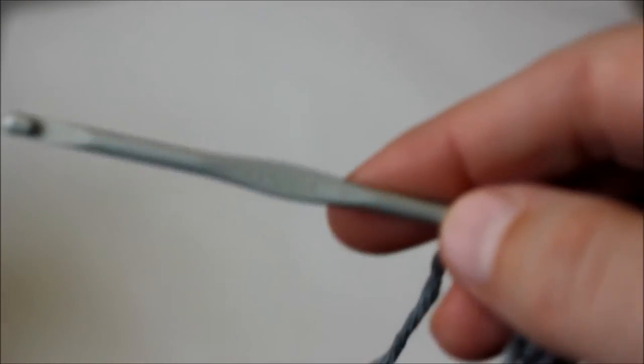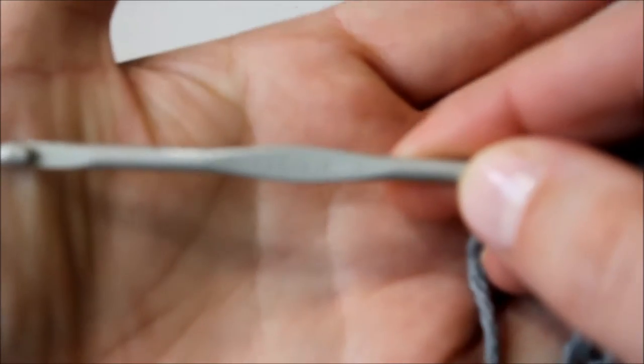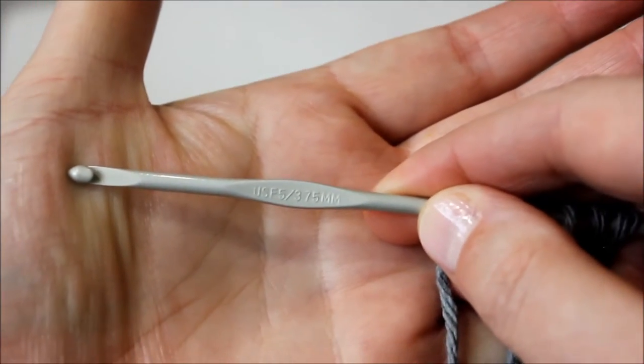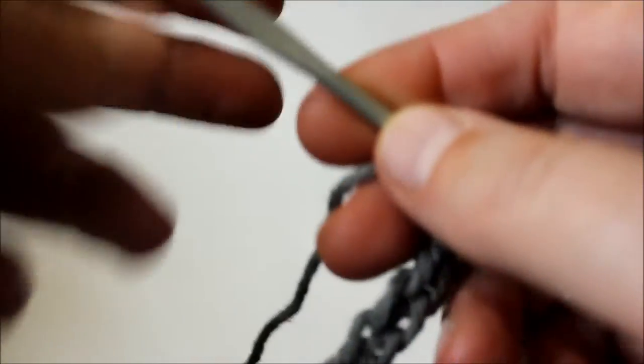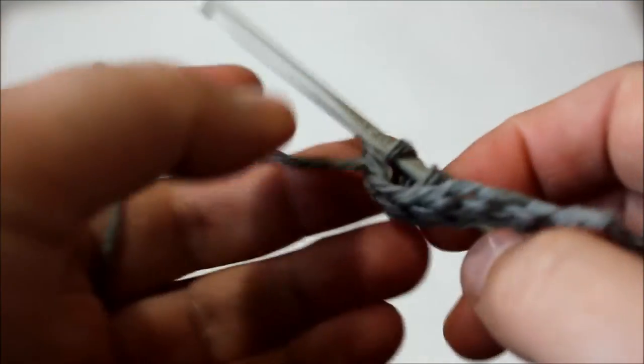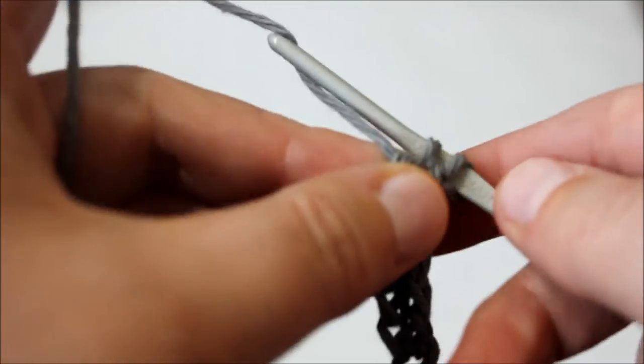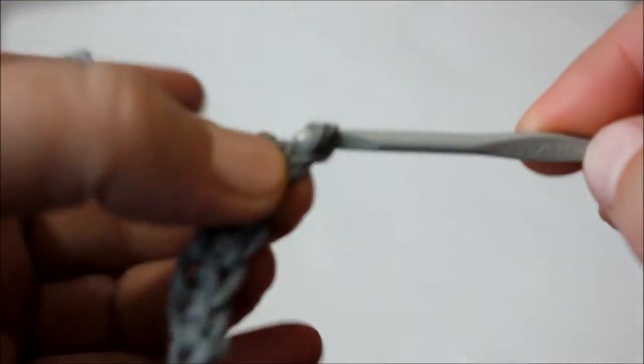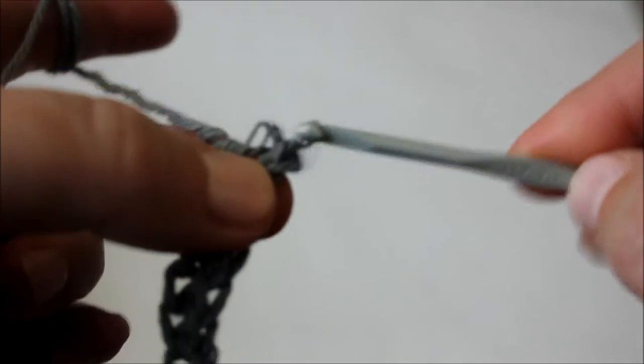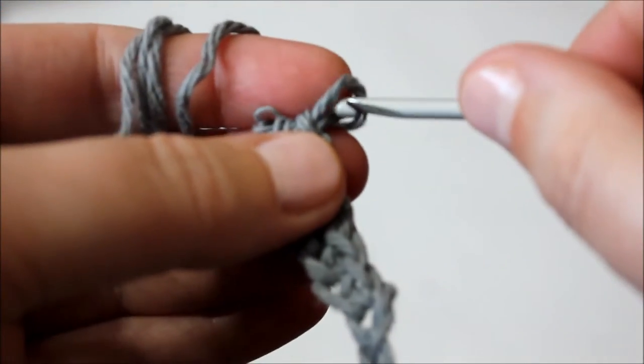And I always use the same crochet hook, it's the 3.75. I love this crochet hook. I bought so many different kinds, expensive ones. I always came back to this. I just like it. It goes nice and smooth. Cotton yarn, it splits a lot.